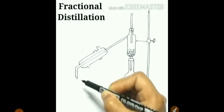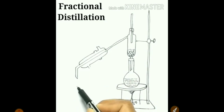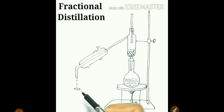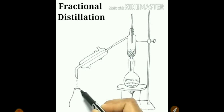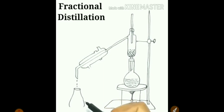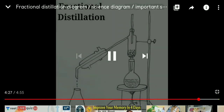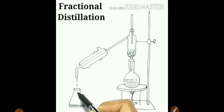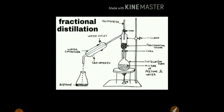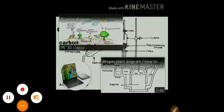This is the condenser. Then here there will be a receiver to collect the components of the mixture — a small conical flask can be kept as the receiver. This is the complete diagram of fractional distillation.